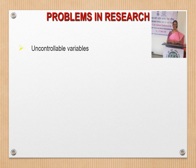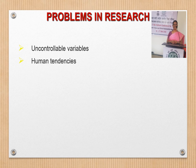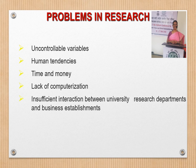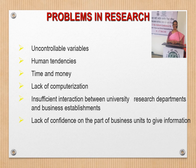What are the problems in research? There are a few variables which are not controllable and we need to accept them. Human tendencies — when we collect data, how genuine their responses are — we won't always be able to find out. The time and money involved can sometimes be a great expenditure. Lack of computerization, insufficient interaction between university research departments and business establishments, and lack of industry-institutional linkage also pose challenges, along with lack of confidence on the part of business units to give information.